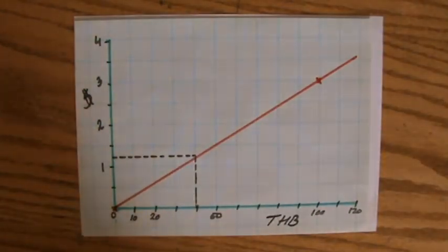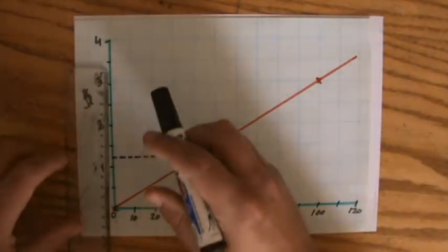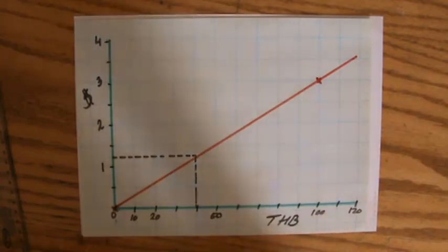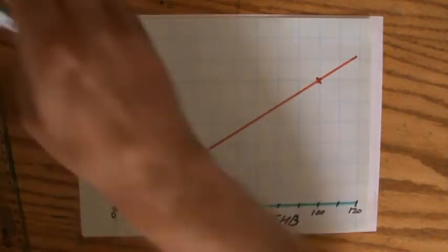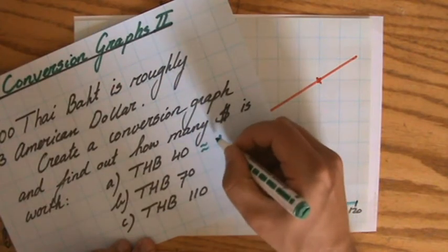And then I can read exactly—if I use a sharp pencil and a ruler—I can read exactly how many dollars that is going to be. And 150, well that is going to be 120, so that is going to be one dollar and 20 cents. So that is one dollar—I should put a unit there—and 20 cents.